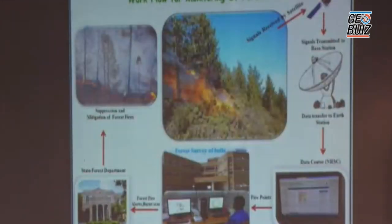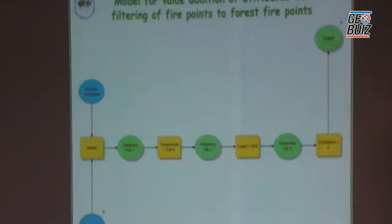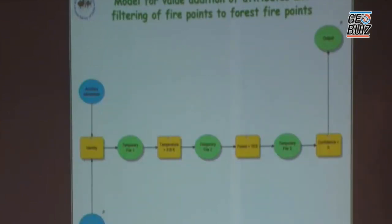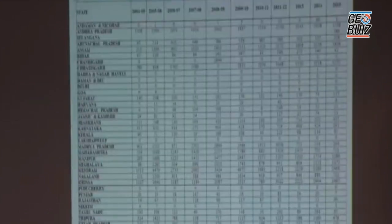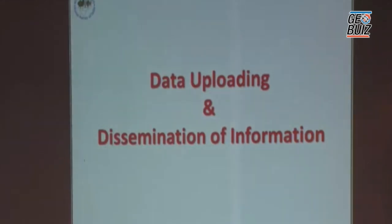We are getting the data, doing processing, and finally doing value addition. Every day you can see on the FSI portal a picture with the forest cover layer overlaid with fire points — this is how we are detecting and doing value addition to each fire point, which is then disseminated to the nodal officer. This gives a national-level picture of forest fires reported across the country and the year-wise scenario of fire points. The program flow involves getting the signal, processing, value addition, and finally disseminating to the state nodal officer for forest fire.